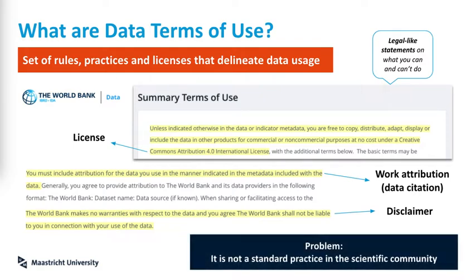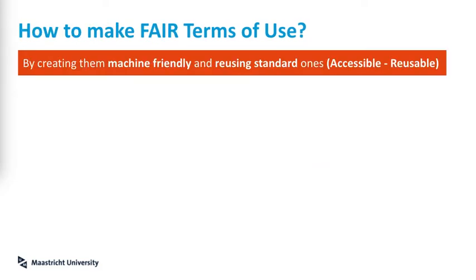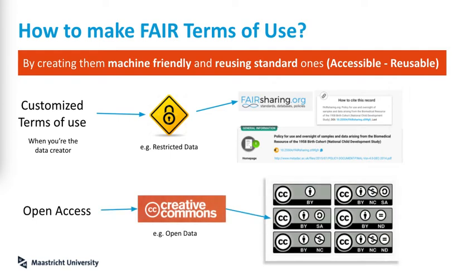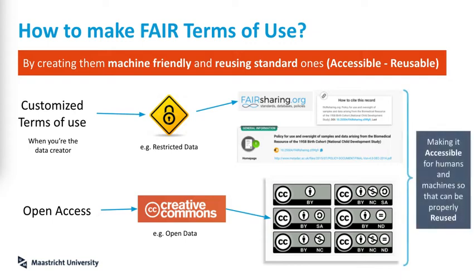We can see the problem — this is not a standard practice in the scientific community; we are not used to writing legal statements, unless you are a legal researcher maybe. So how do we make FAIR terms of use? We just need to create them, first of all, and again in a machine-friendly way, but also reuse standard ones, so that the data is accessible and reusable legally speaking. When you are the data creator, normally you have to create your own terms of use — like for restricted data. You make them machine-friendly by registering them in data policy registries like FAIRsharing, where your policy or terms of use also gets an identifier. In the case of open access data, you can always choose to use a Creative Commons license that fits your data best. Remember, you want it also to be human-friendly.